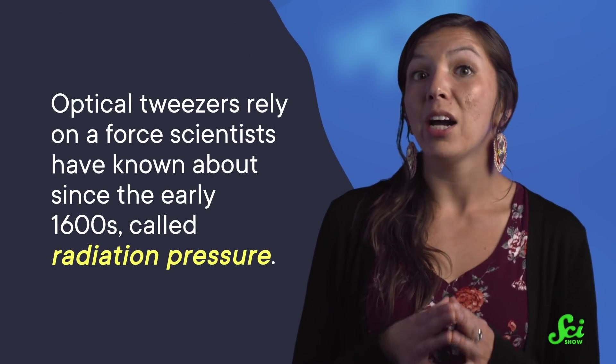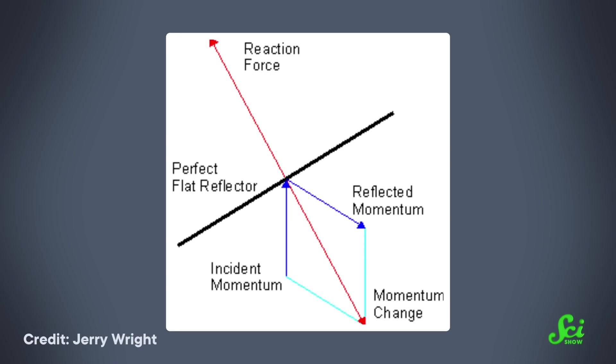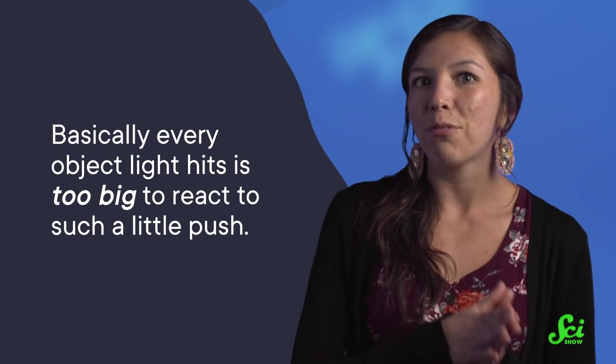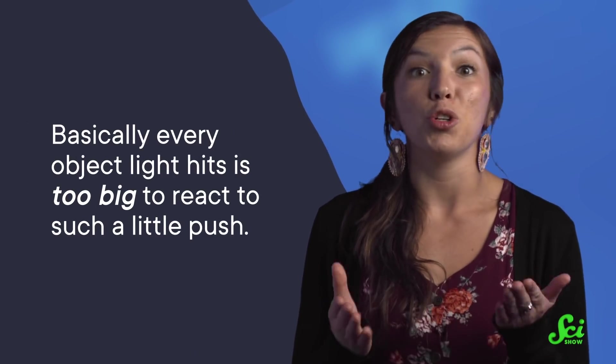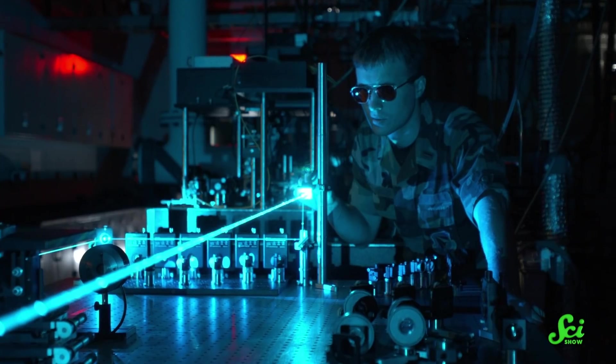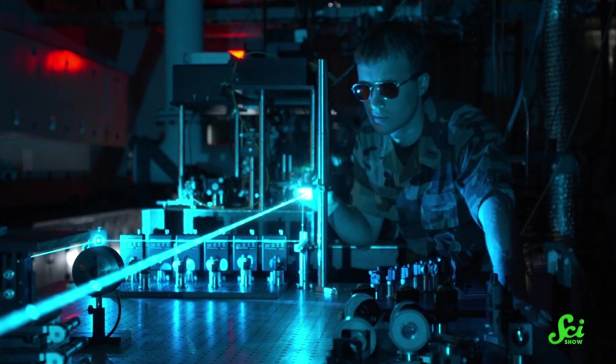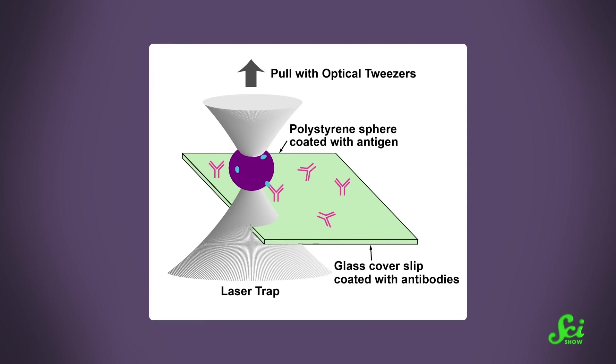Optical tweezers rely on a force scientists have known about since the early 1600s called radiation pressure. The idea is that photons of light actually apply a tiny amount of physical pressure to objects that they hit, but it's such a tiny amount of pressure that it usually doesn't do anything, because basically every object light hits is too big to react to such a little push. But when the laser was invented in the 1960s, scientists finally had a beam of light that they could use to move things. Lasers were able to focus on a small enough point and hit particles with a small enough mass that the photons could actually move them.